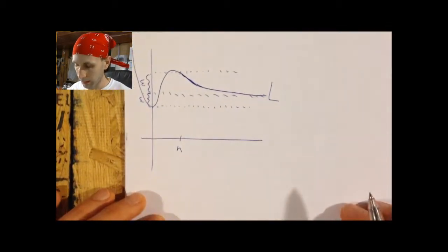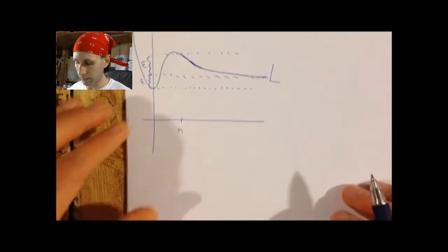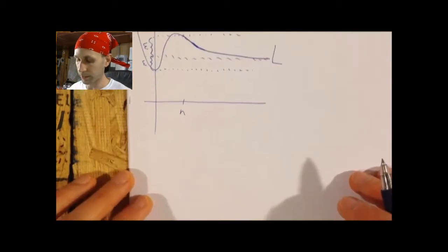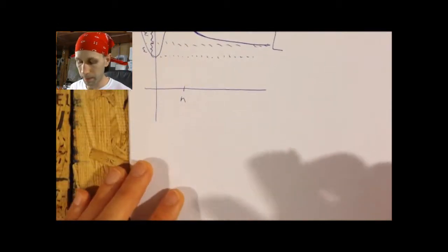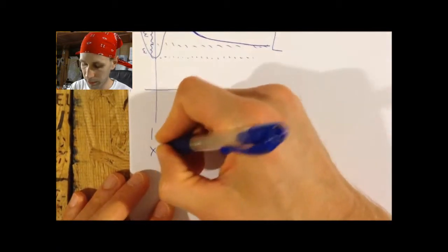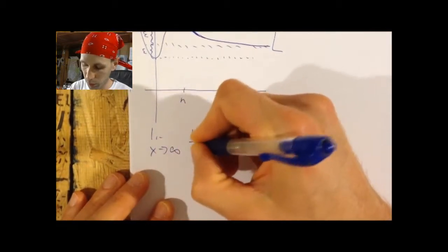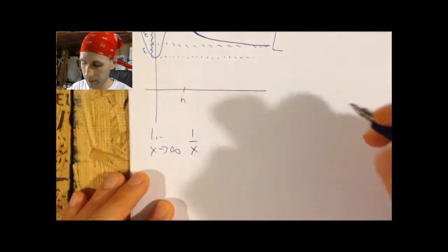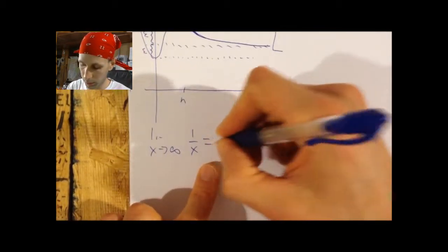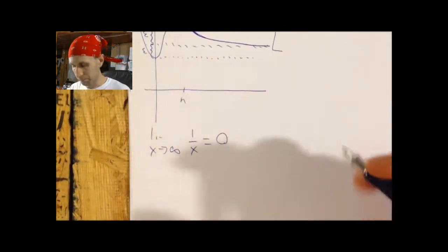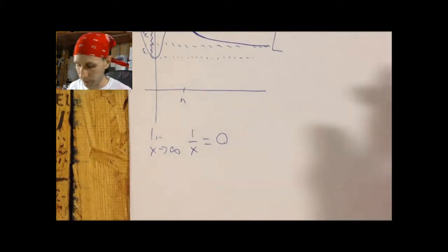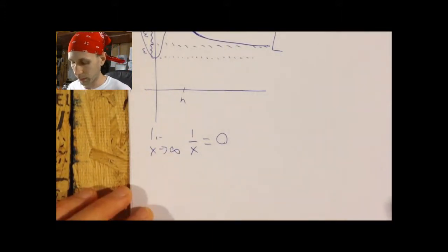The easiest example I can think of is the limit as x approaches infinity of 1 over x. Now everybody knows what this limit is. This limit is clearly zero. Intuitively, we understand that — we've seen it in algebra class.